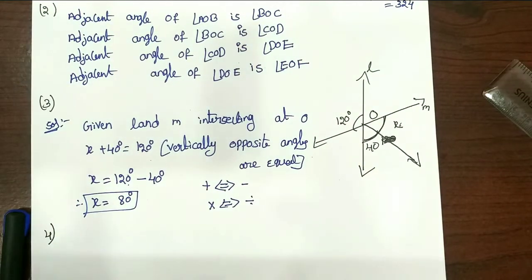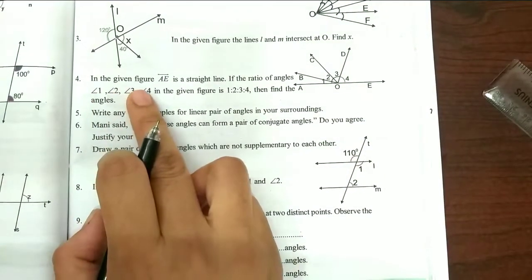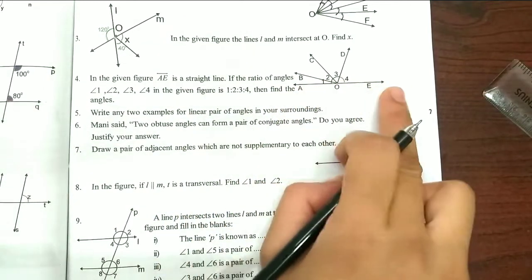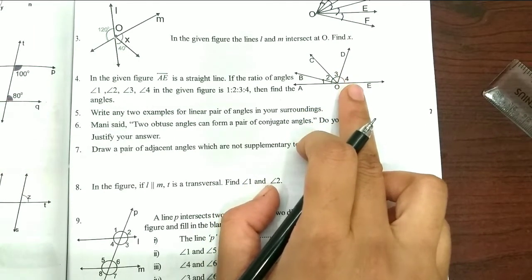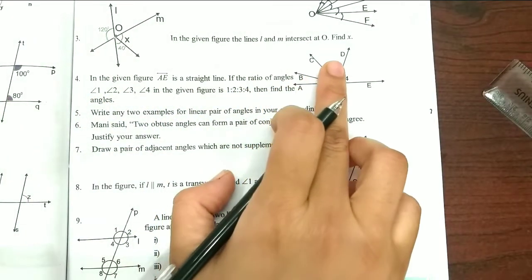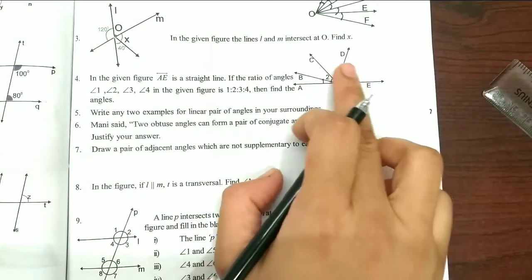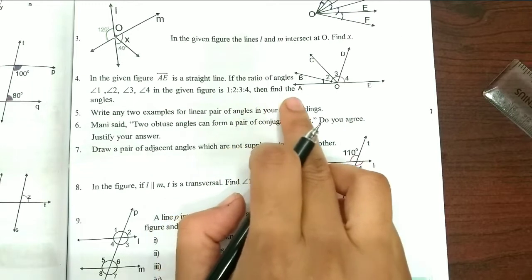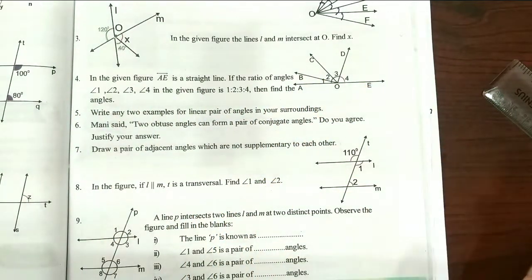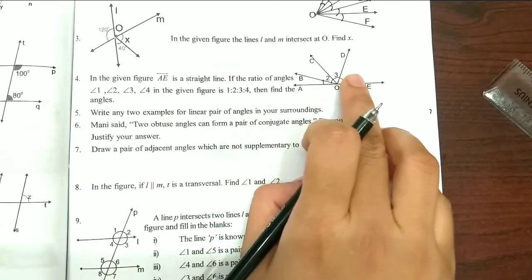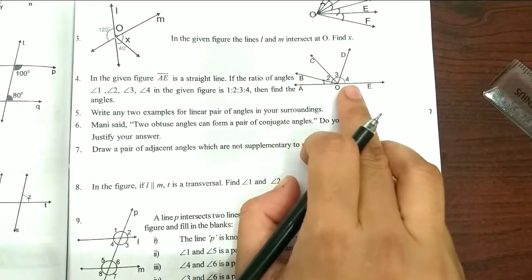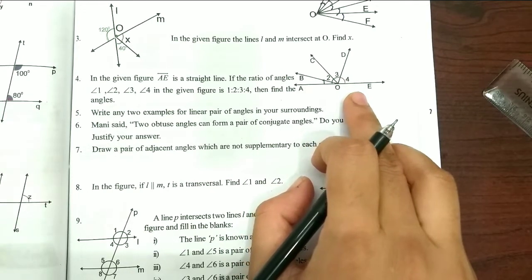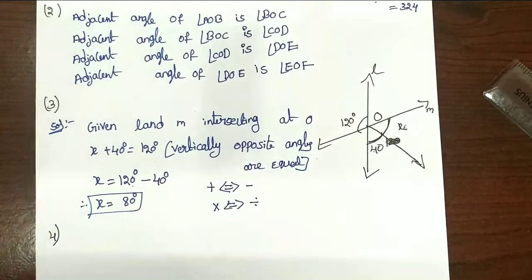Next, the fourth problem. In the given figure, A is a straight line. The total angles on a straight line are equal to 180 degrees. The ratio of angles 1, 2, 3, and 4 is 1:2:3:4. We need to find each angle.